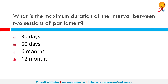What is the maximum duration of interval between two sessions of parliament? From time to time, the sessions of parliament are called upon by the President. According to the Constitution, the maximum gap between two sessions cannot be more than six months, so there must be at least two sessions in a year. However, there are usually three sessions: the budget session (February to May), the monsoon session (July to September), and the winter session (November to December).